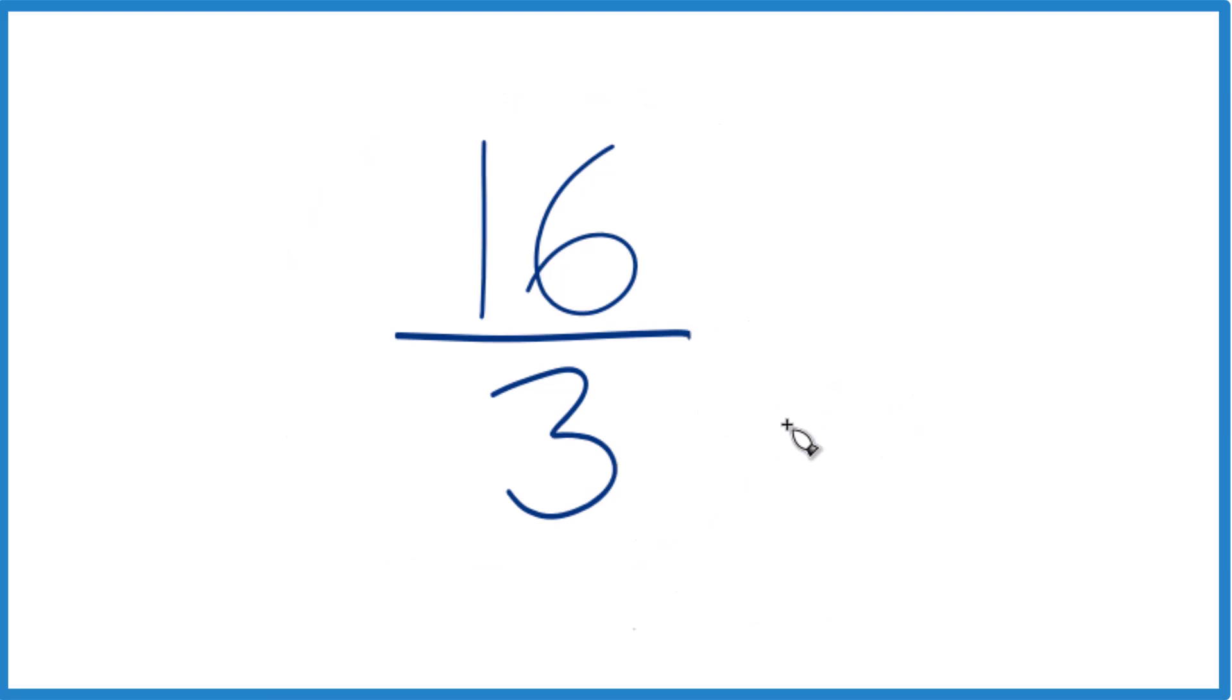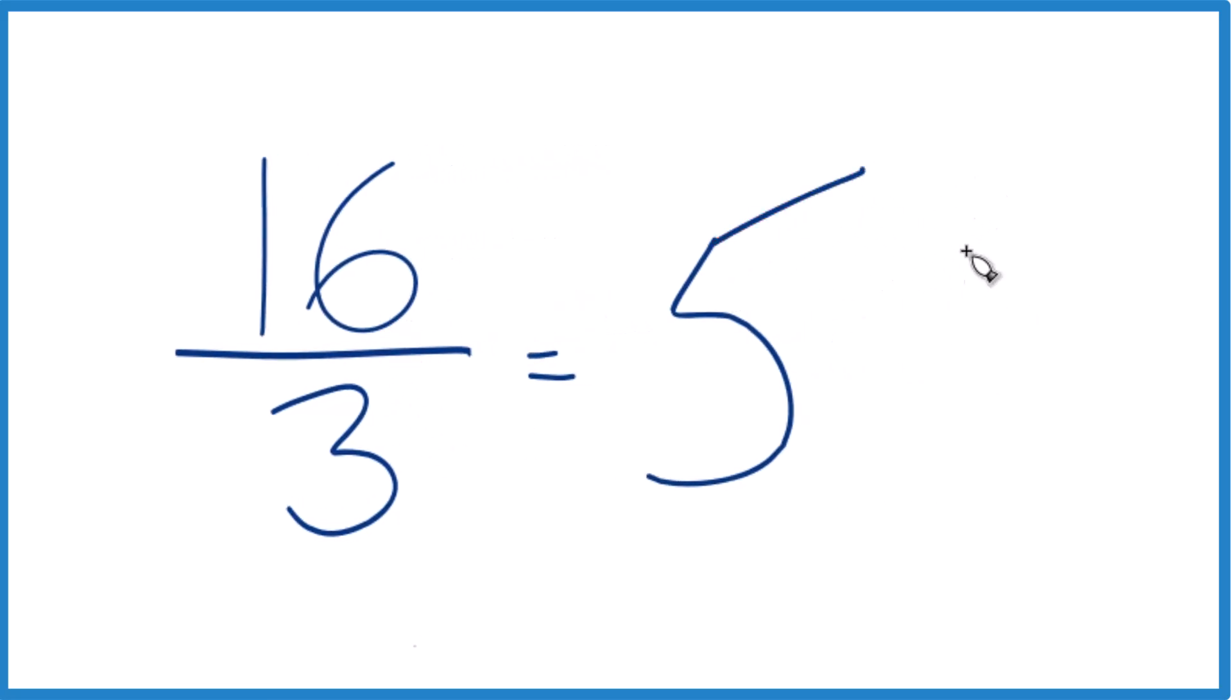But we could write it as a mixed number. Right now it's an improper fraction. The numerator is larger than the denominator. So 3 goes into 16. 5 times 3 is 15, and then we just have 1 left over, bring the 3 across.